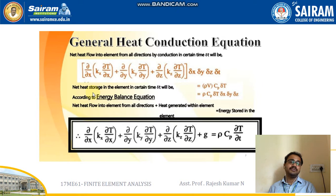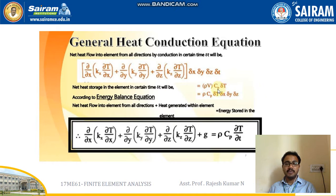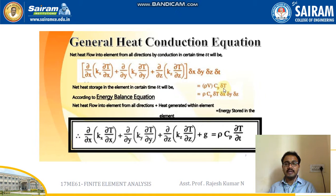The net heat storage in the element in a certain time Δt will be written as ρ·V·Cp·Δt, where ρ is the density, V is the volume, and Cp is the specific heat. The volume can be written as Δx·Δy·Δz, so this becomes ρ·Cp·Δx·Δy·Δz·ΔT, where ΔT is the small temperature change.